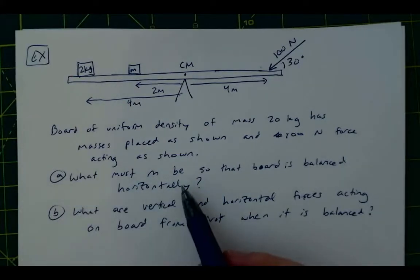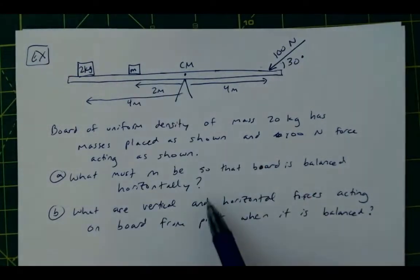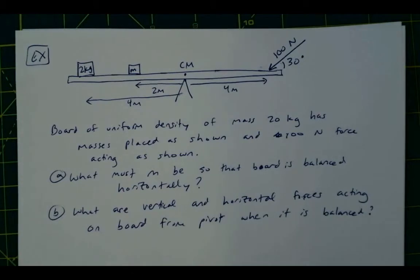And the question is, what must the mass be here, m, so that the board is balanced horizontally? And then further, when it is balanced, what are the vertical and horizontal forces acting on the board from the pivot point?